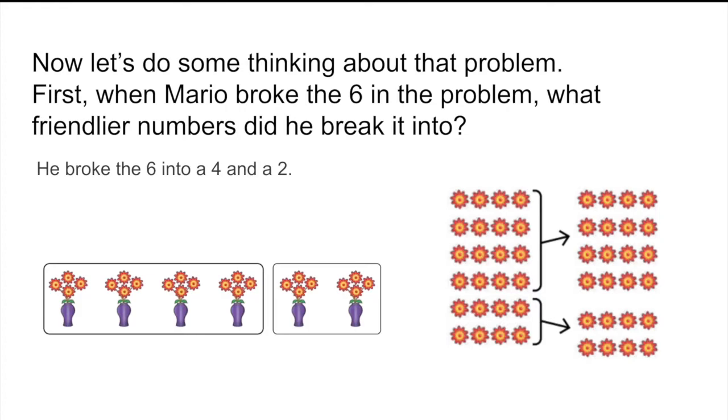He broke the six into a four and a two. So instead of looking at all six vases as one group, he's looking at them as a group of four and a group of two. And here it is in the arrays. Instead of six times four, he would rather think about it as four times four and two times four.